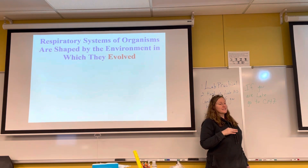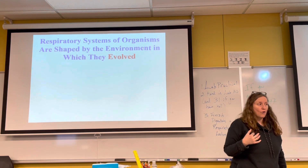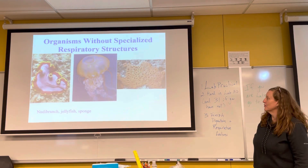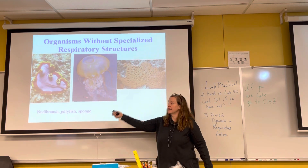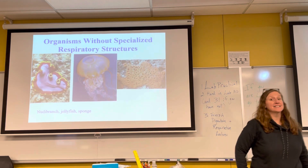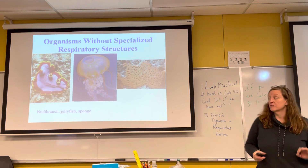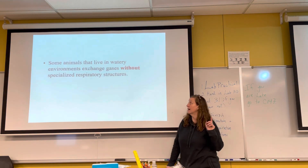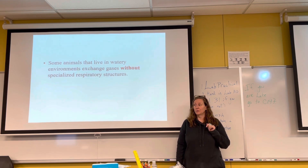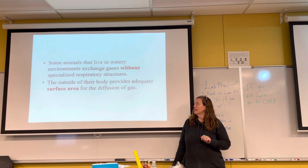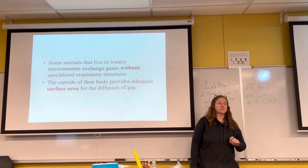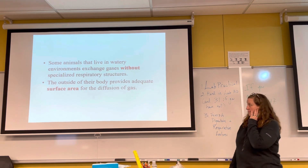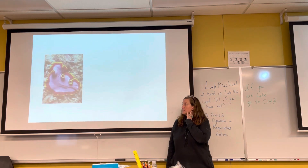Regardless of what organism we're talking about, they're going to have these features in common with their respiratory structures or organs. We're going to look at some different organisms and how they've evolved to undergo respiration. Simple animals like flatworms, jellyfish, and sponges do not have a respiratory system — only structures. Their bodies also have features that allow for a very large surface area for respiration.